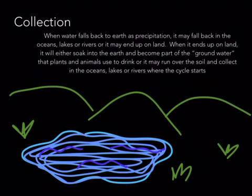Collection is when the water falls back to the earth as precipitation. It may fall back in oceans, lakes, or rivers. Or it may end up on the land. When it ends up on the land, it will either soak into the earth and become part of ground water that plants and animals use to drink, or it may run over the soil and collect into oceans, lakes, or rivers, where the cycle starts all over again.